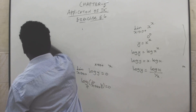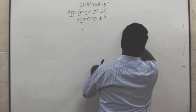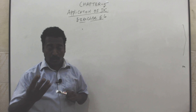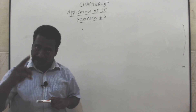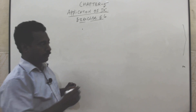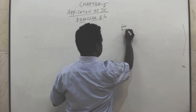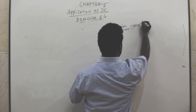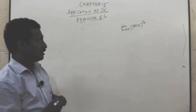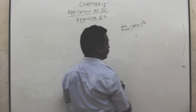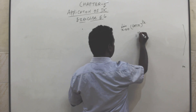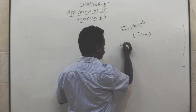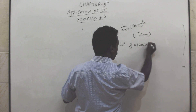The last problem in this exercise — problem number 13: limit x tends to 0 plus of cos x power (1/x). Questions 10 to 13 are very important. Substituting x = 0: cos 0 = 1, 1/0 = ∞, so this is 1^∞ form. Let y = cos x power (1/x).